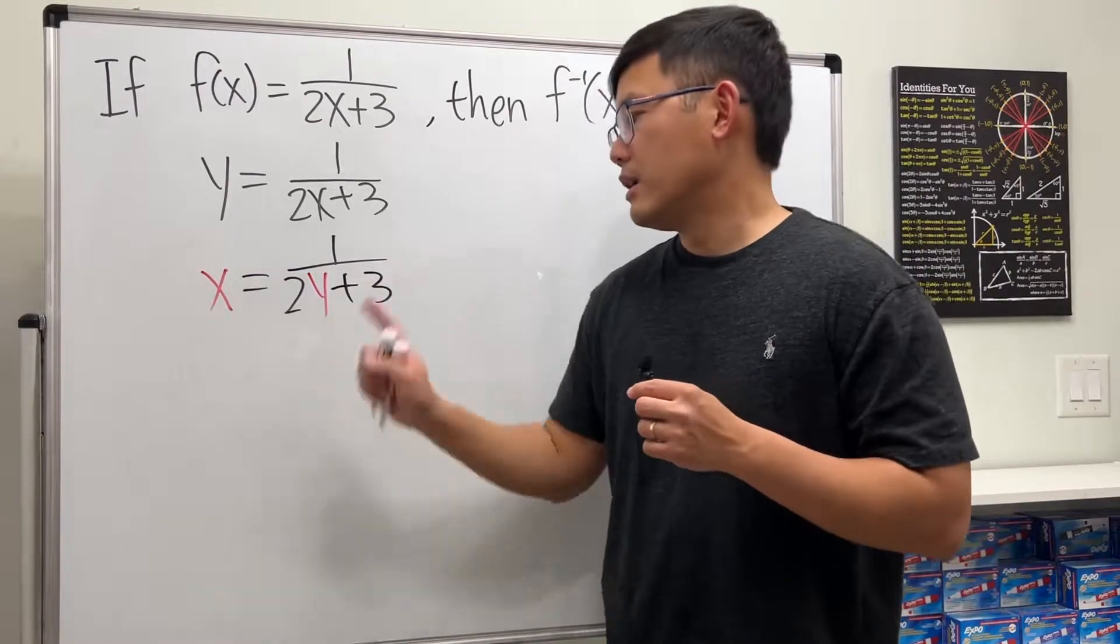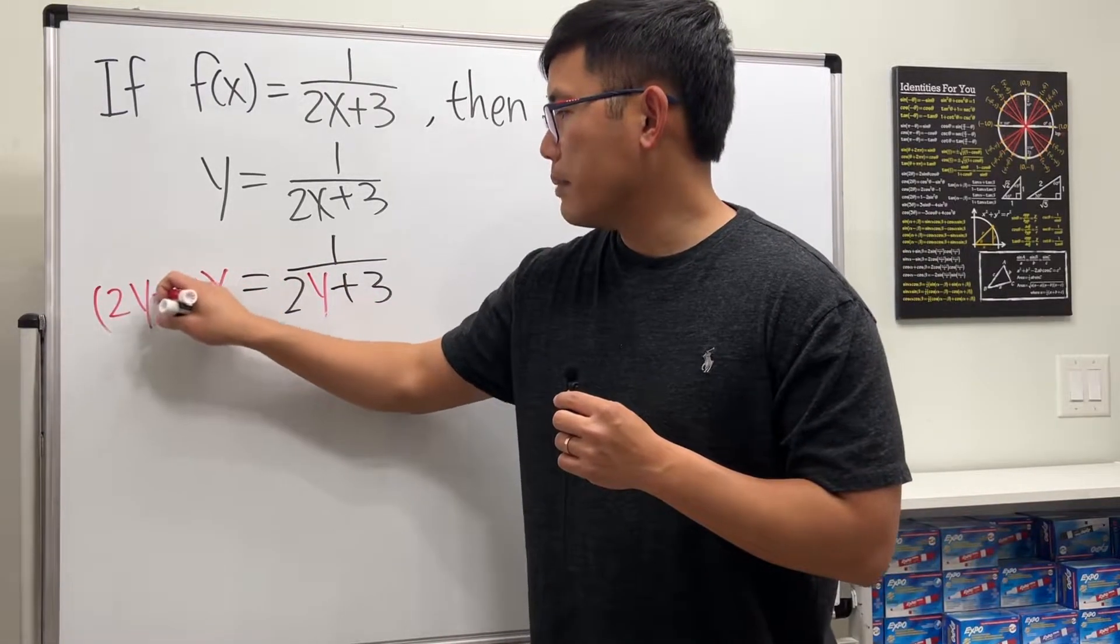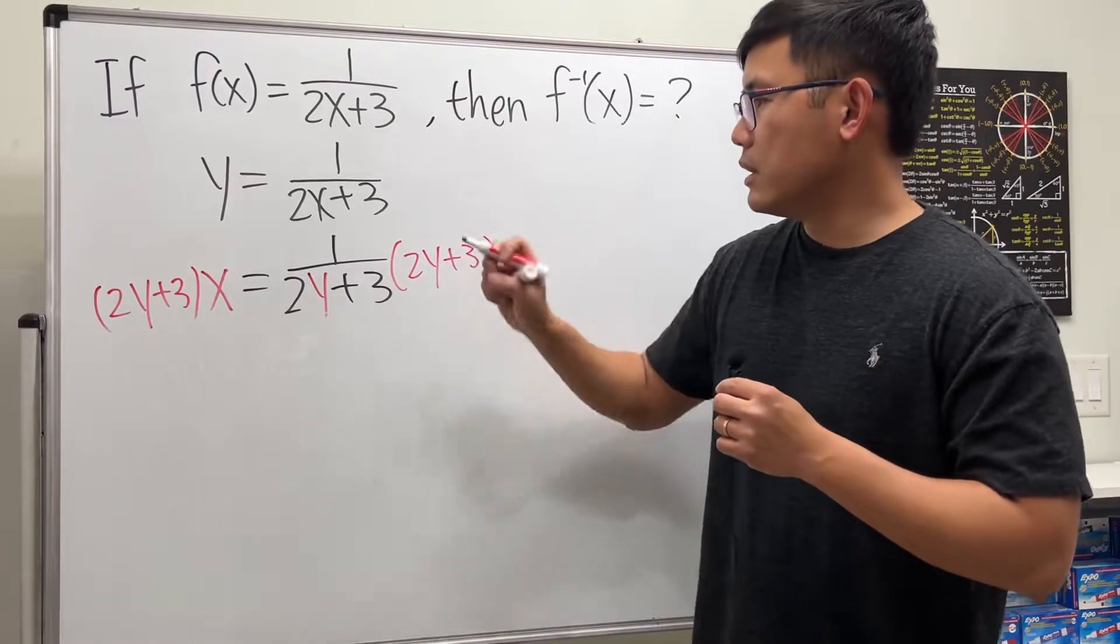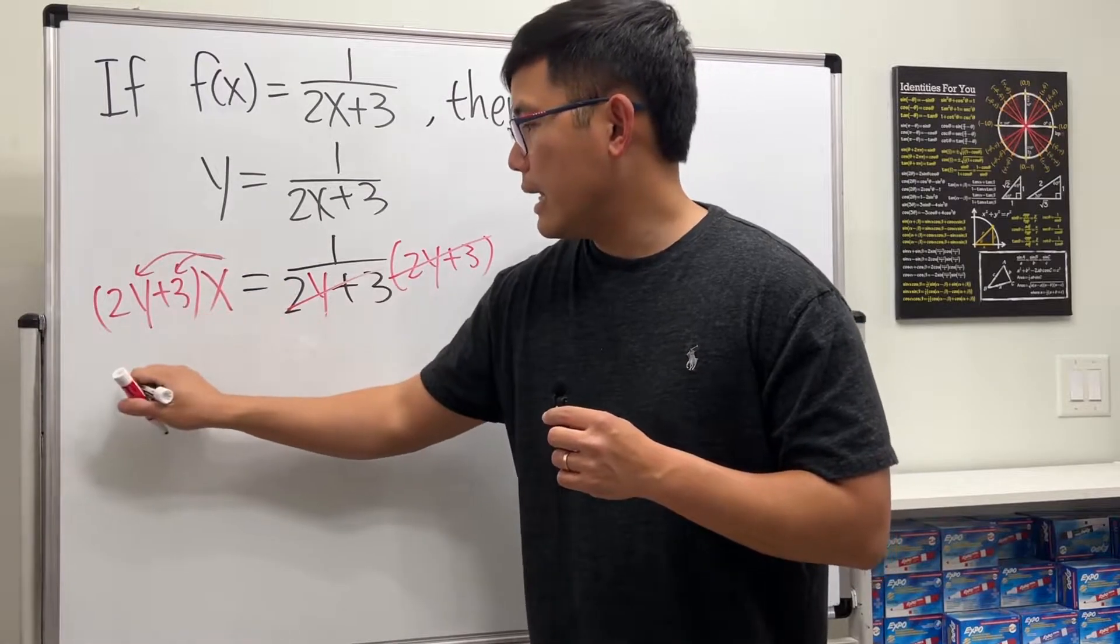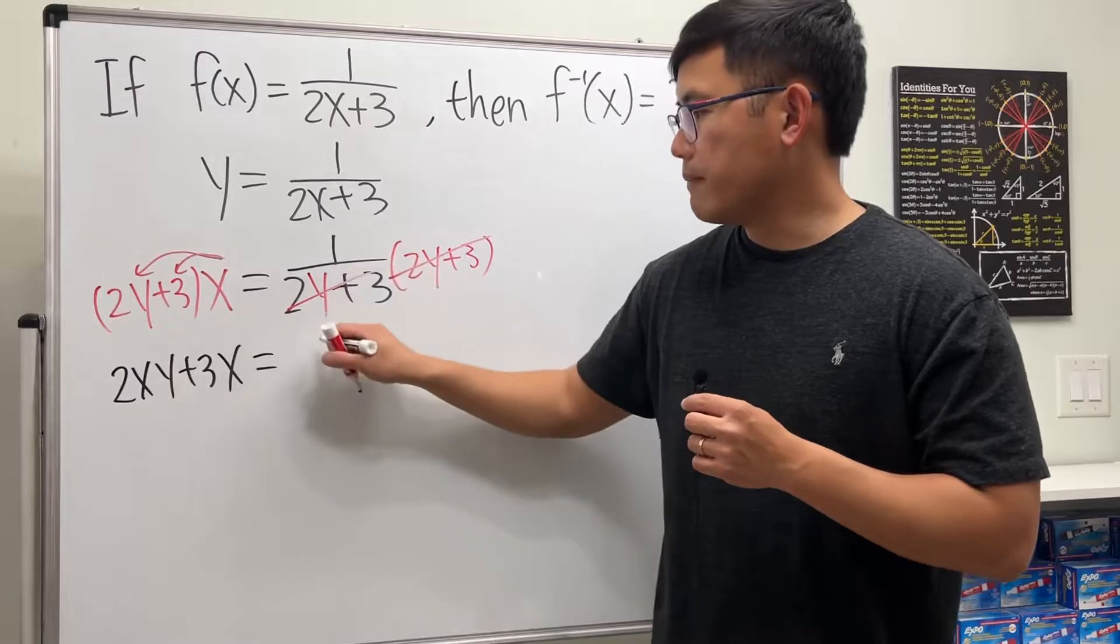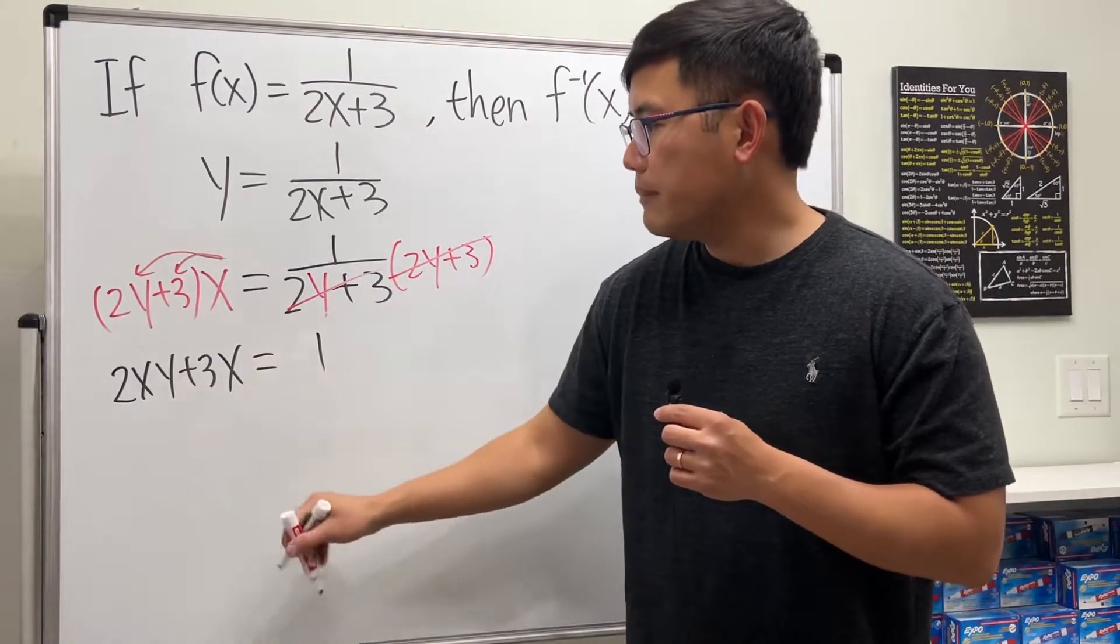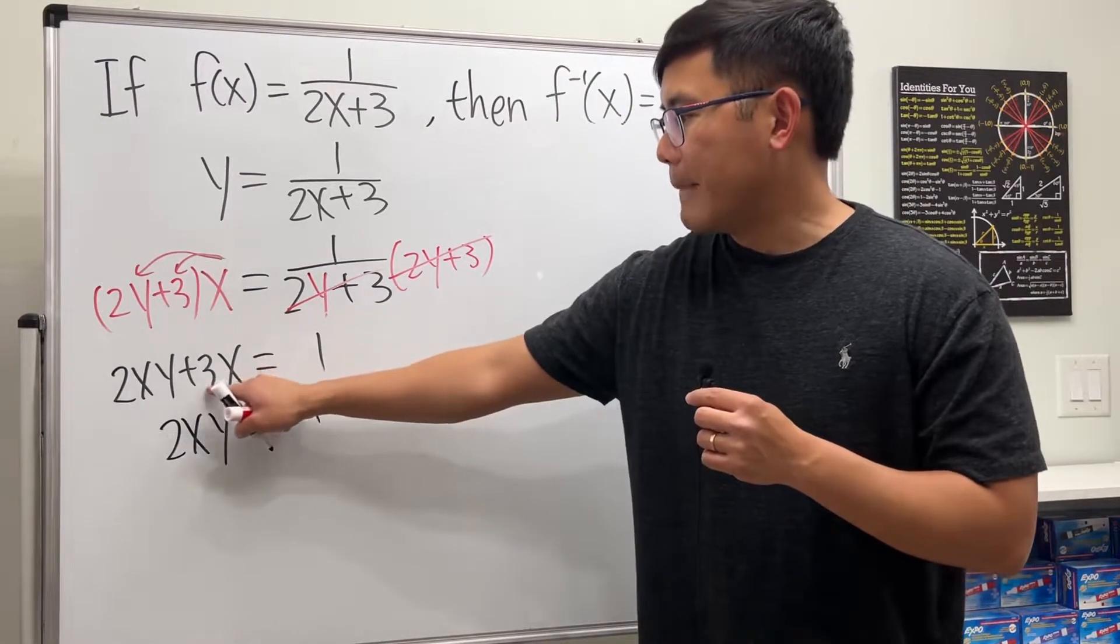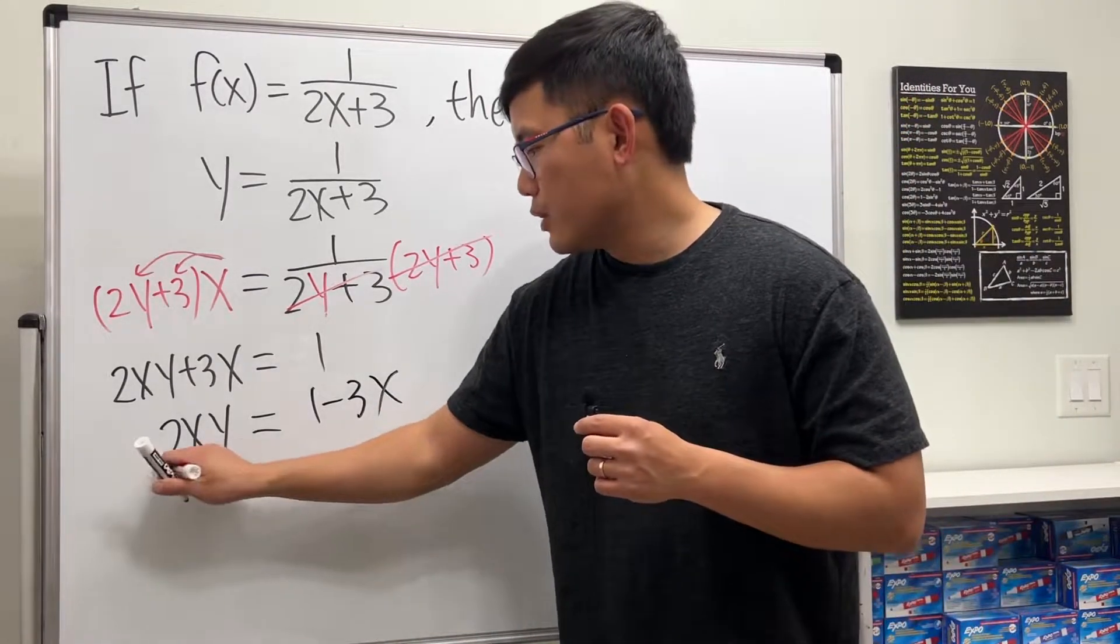Step 3, isolate this new y. Let's multiply this on both sides, so 2y plus 3 here and also 2y plus 3 here. This and that cancel, and for this, let's distribute the x, so we have 2xy plus 3x that's equal to 1. Let me bring this to here because we want to isolate the y, so we will have 2xy that will be equal to 1 minus 3x.